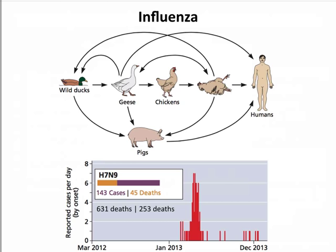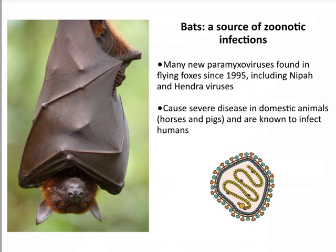Bats are another major source of zoonotic infection. Bats apparently are loaded with viruses of all different sorts. People have gone and looked in bat populations and found hundreds and hundreds of viruses, and they don't seem to hurt the bats whatsoever. Somehow the bat immune system — which we don't understand very well — can deal with these infections. The bats are healthy, they spread among bat populations, and occasionally they get into people. As we expand our populations and build our homes, it's inevitable we'll get viruses from bats.